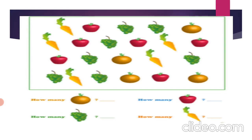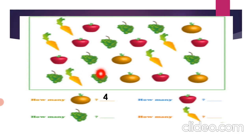Come on, start counting: one, two, three, and four. So there are four oranges. Now grapes: one grape, two, three, four, five, six, and seven — seven grapes are there. Do you all like grapes? Yes.